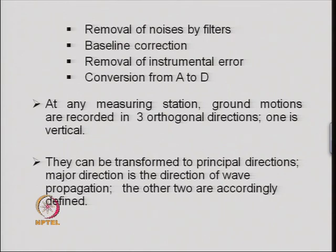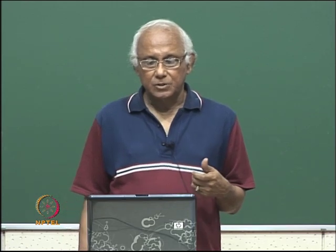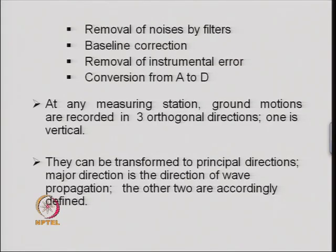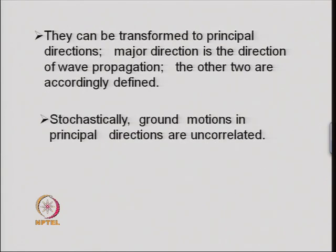At any measuring station, ground motions are recorded in three orthogonal directions — one of which is vertical, and the other two are the two horizontal earthquake directions. These three ground motion records can be transformed to principal directions, where the major direction is the direction of wave propagation and the other two are selected accordingly. This transformation assumes that the ground motion in principal directions is uncorrelated, which is valid when we describe the ground motion stochastically.